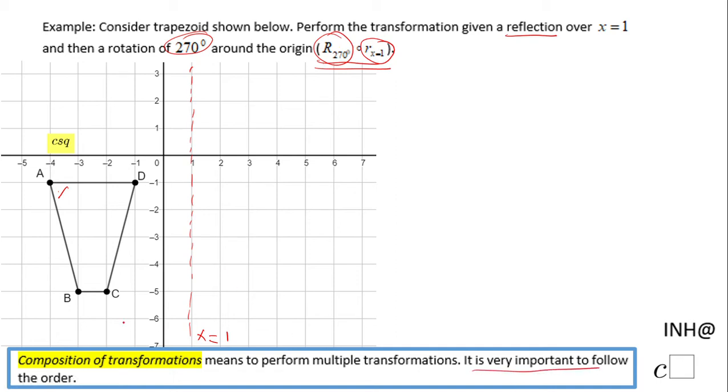So let's reflect point D first, which is gonna be right here, two units away from the line of reflection.